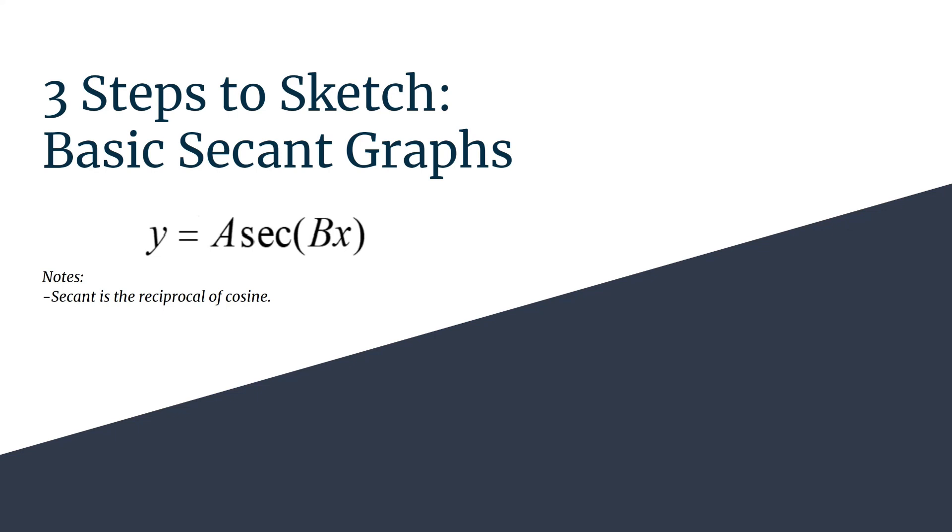So if you can graph cosine graphs that are unshifted, it is just pretty much one extra step here, just knowing what a reciprocal graph looks like, and you'll be able to graph these easily as well. So if you are not familiar with how to graph cosine, go ahead and watch the three steps to sketch video on graphing unshifted cosine. And that will help a ton because you'll have almost all of the steps you need to graph basic secant graphs.